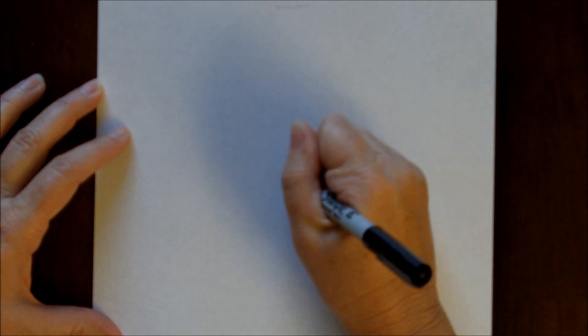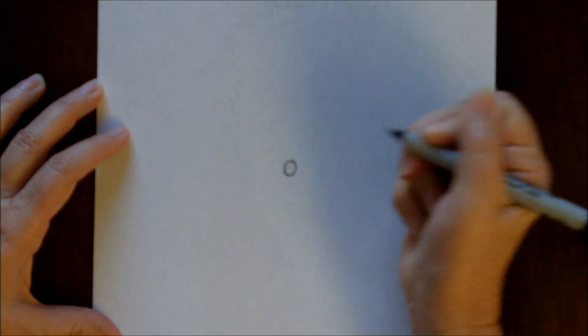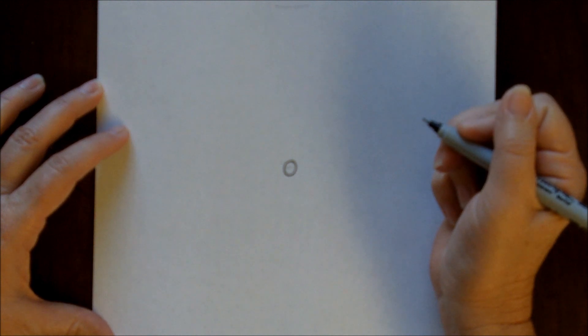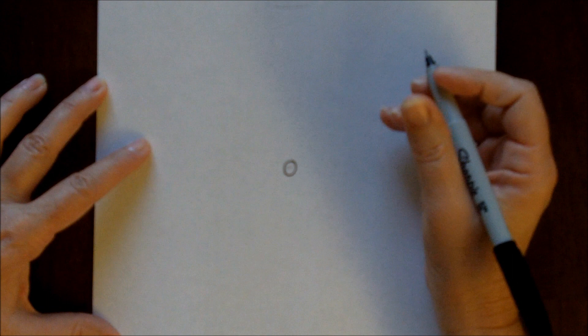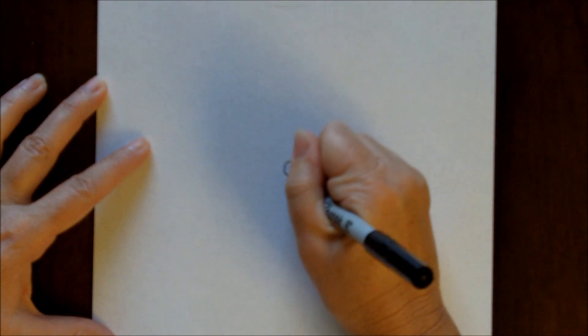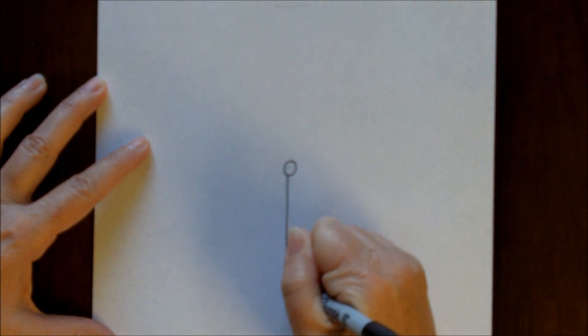We're going to start out with a circle in the middle of your paper, maybe a little bit more towards the top. From that circle, you're going to make a straight line down.